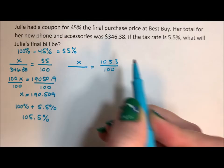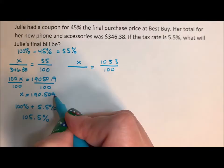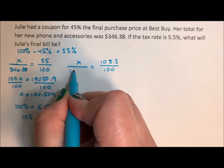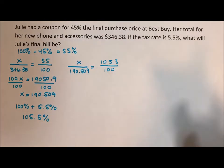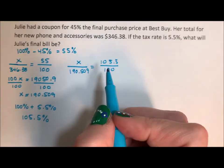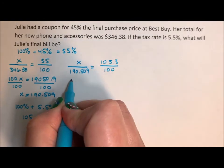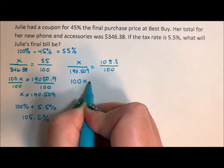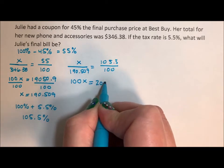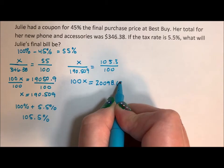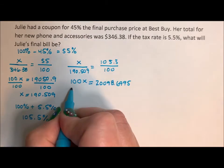This time, our total will go up. And what the total is, is our 190.509. And I'm not rounding because cash registers wouldn't round at this point. So we cross multiply again and we get 100x equals 20,098.6995. We divide by 100.